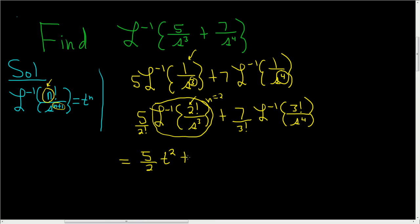3 factorial is 6, so we get plus 7 over 6. And here our n is 3, so it's simply t cubed. And that's it.